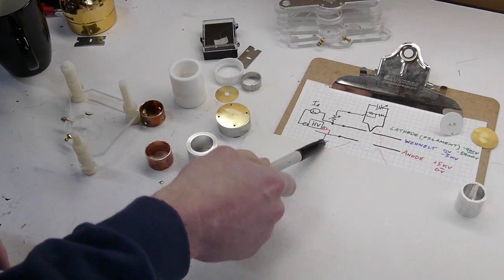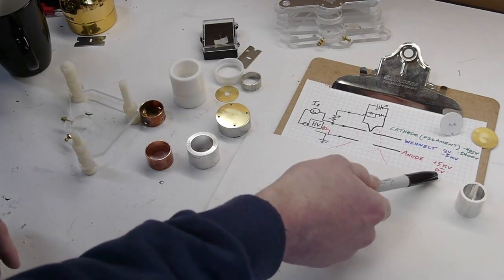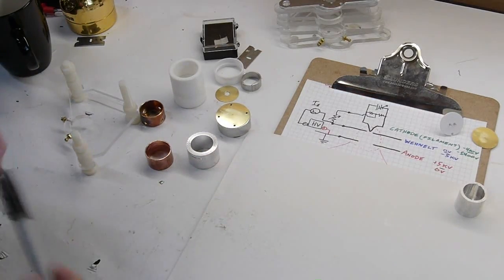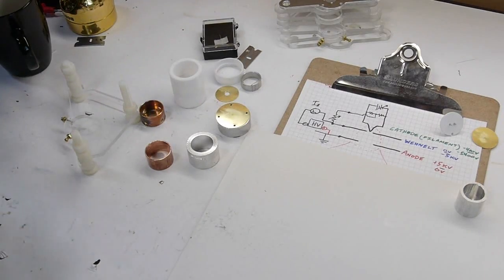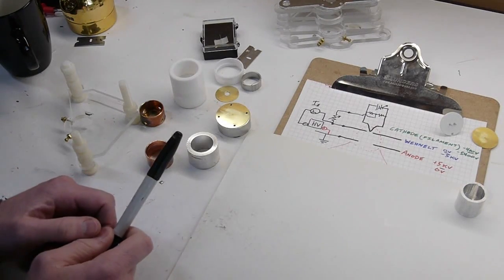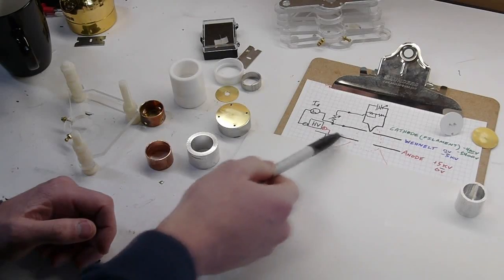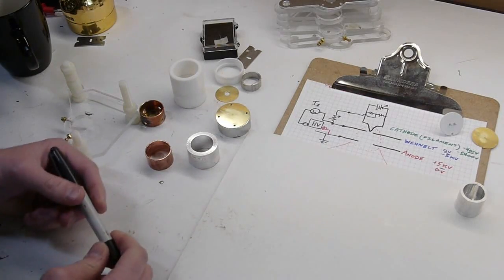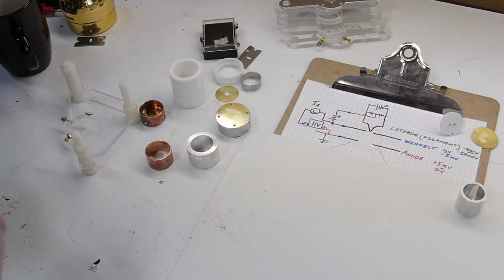So in this case we're going to call the anode ground zero and everything will be measured to that. So these are all just metal conductors. We're not going to talk about insulators yet or how this thing is built.